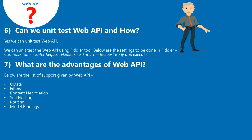Question 7: What are the advantages of Web API? Below is the list of support given by Web API: OData, Filters, Content Negotiation, Self-hosting, Routing, and Model Bindings.